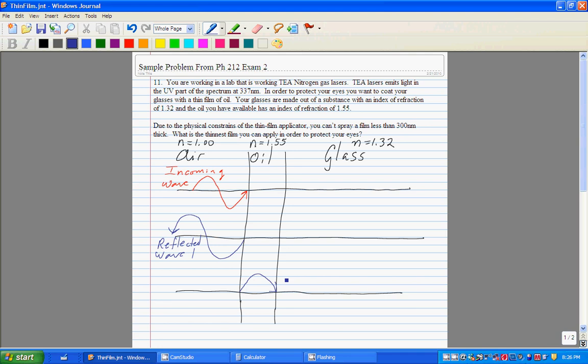Our incoming wave penetrated the oil and got to the oil-glass boundary. Notice that glass has a lower index of refraction than oil, so we don't get a phase shift. We don't get an inversion like we did at the first interface. That means that the light continues to go this direction and then exits the glass like this. So reflected wave 2 is going to look like this, and notice that if you add reflected wave 1 and reflected wave 2, they actually cancel out.